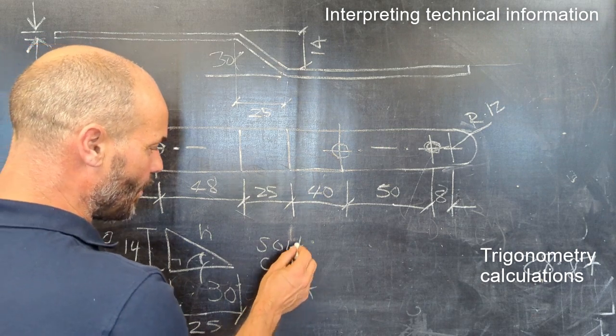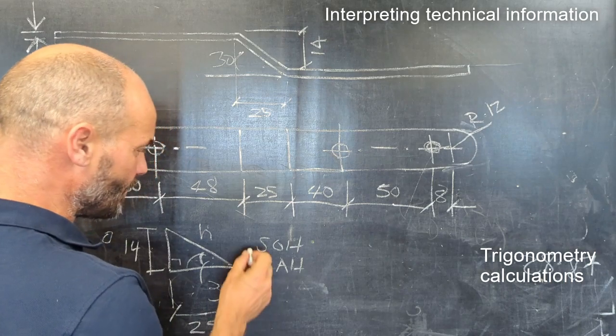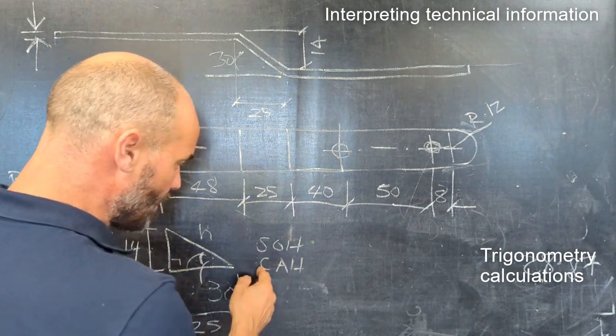So we want to find the hypotenuse. We can't find the hypotenuse using tangent rules, so we're going to have to use the sine or cosine rule. Let's go for cosine.